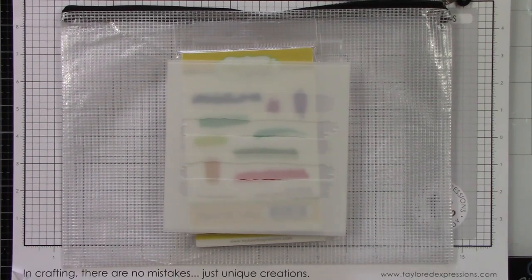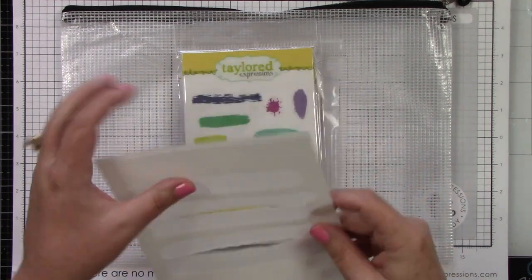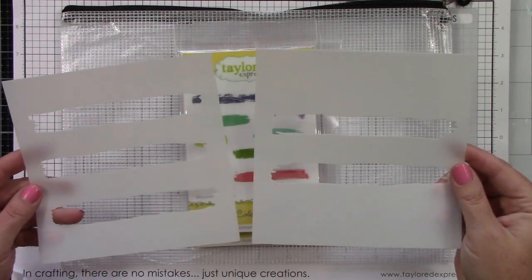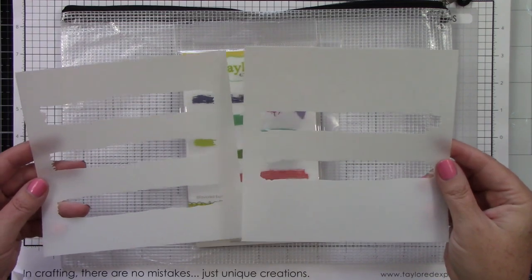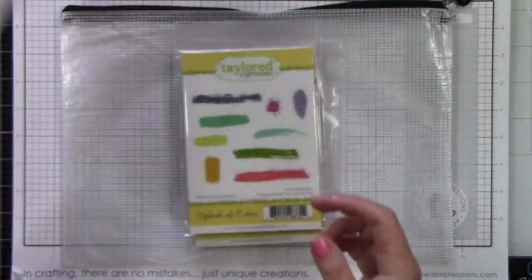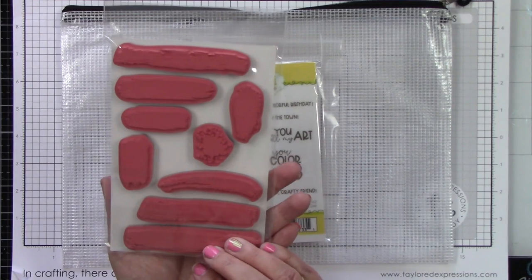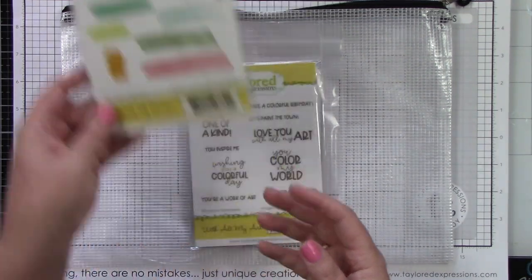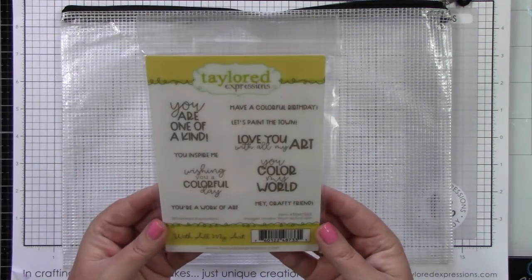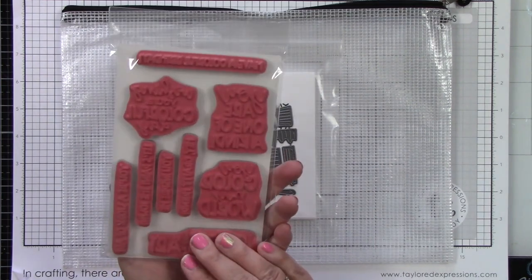You have the Bold Brushstrokes layering stencil. This is a two-piece stencil. Then you have the Splash of Color stamp set, and look at all of those fun different brushstrokes that you can add to your card and a splatter. Then you have the With All My Art sentiment stamp.